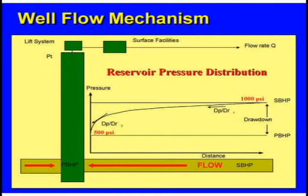Way out in the reservoir we have 1,000 pounds, and as you get closer to the producing well, the pressure drops. Here it's dropped down to about half of what you had out in the reservoir, so we're kind of doing a halfway job of producing it — getting somewhere between 50% and 70% of what's available depending on the technique used. If it were my well, I'd want the pressure at the well to be less than 10% of what's out in the reservoir. So if reservoir pressure is 1,000 pounds, when I'm pumping the well I want the pressure here to be less than 100 pounds.